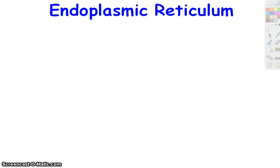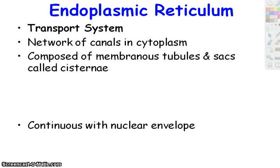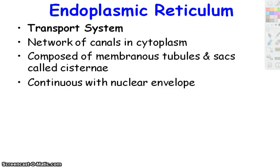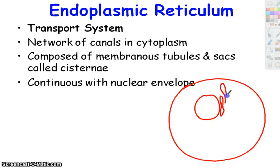The last topic for today is the ER — endoplasmic reticulum. It looks like a bunch of long tubes, a network of canals, and it transports things through the cell. It usually starts right outside of the nucleus. Don't confuse it with Golgi bodies — the ER looks like long canals, while Golgi bodies look like a stack of sacks, like a stack of pancakes. The ER will always look like long tubes.